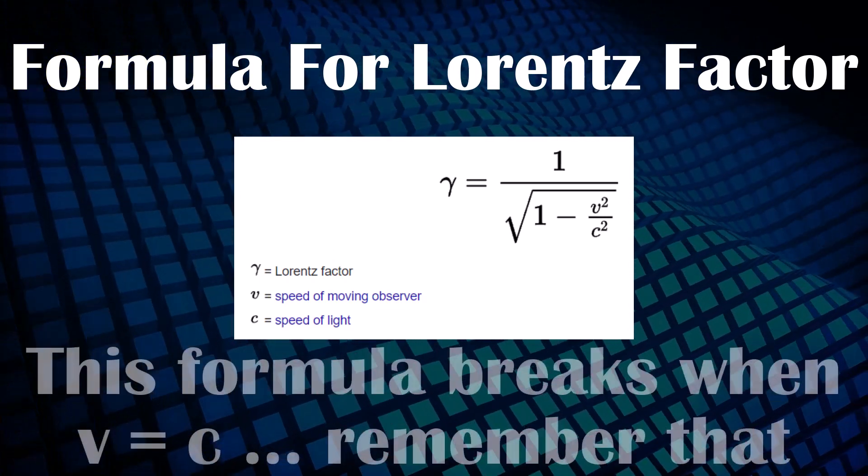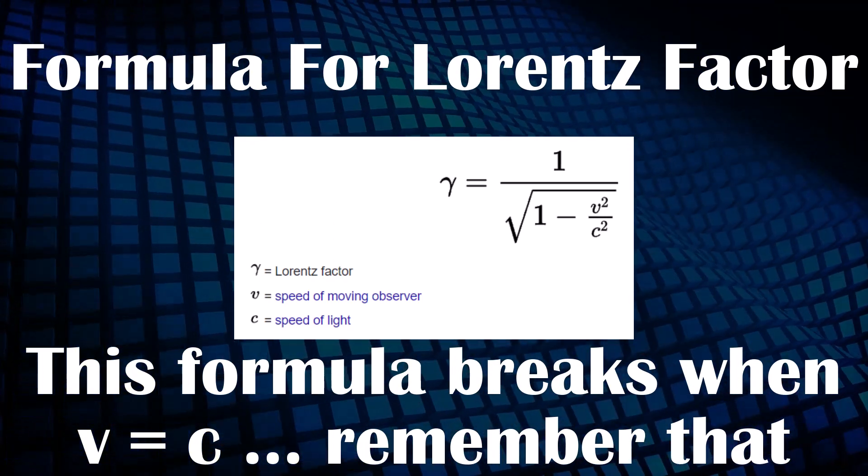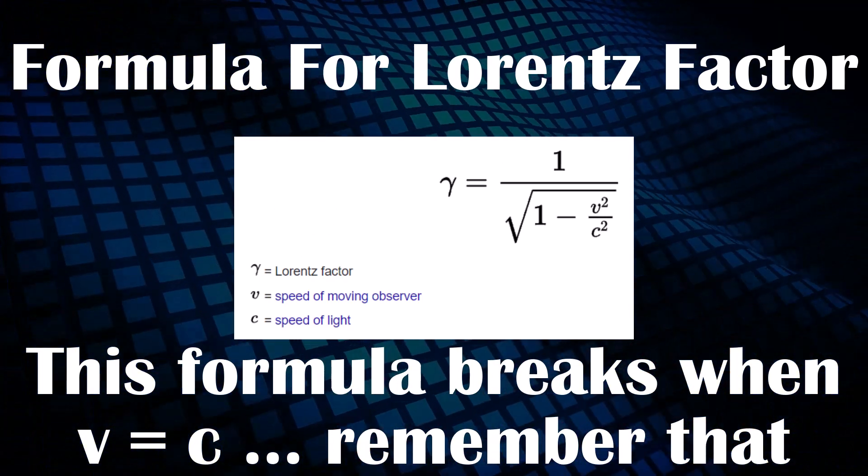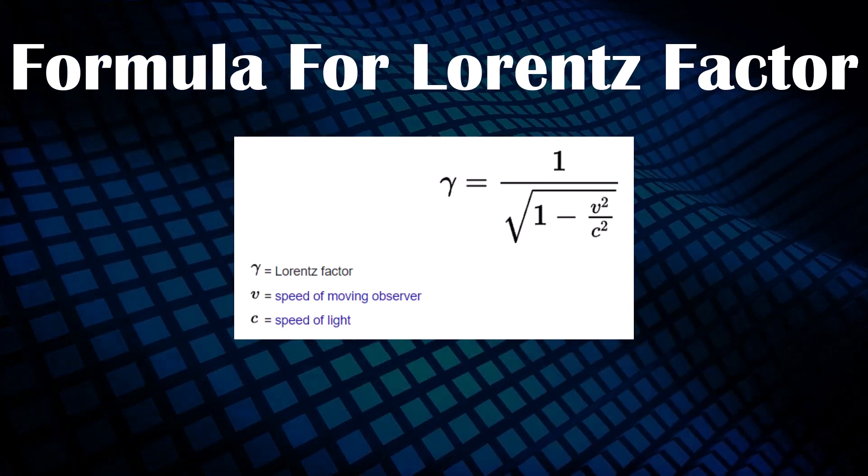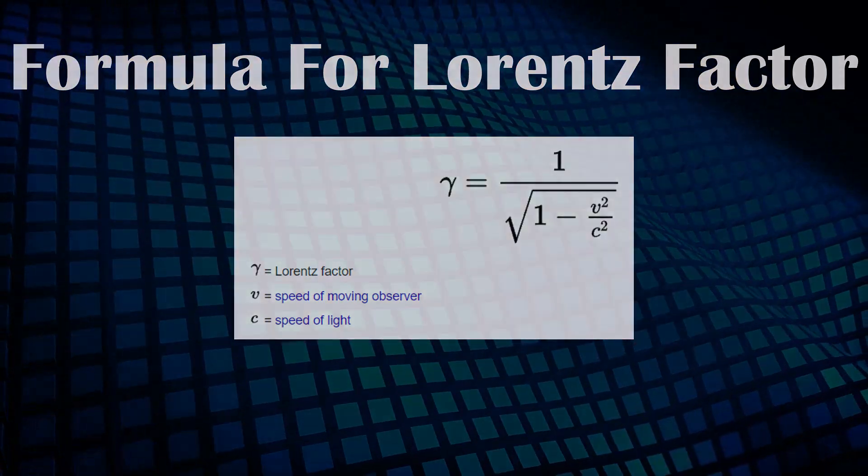And if you tried subbing in c for v, you'd get an error on your calculator, as it's trying to divide one by zero. This equation for gamma implies that as speeds approach the speed of light, the Lorentz factor approaches infinity, and similarly, the factor for light must be infinite.